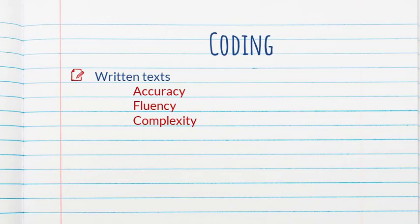And this is a pretty standard way of coding written samples. There are many ways of measuring these three things. And I'm going to simplify things, and I'll say that accuracy is related to number of errors, fluency is related to number of words, and complexity is related to number of clauses.